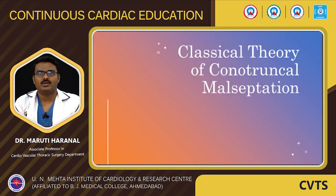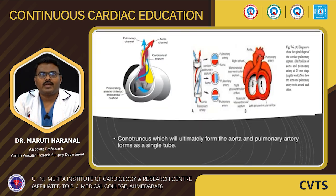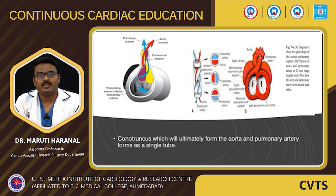In Lev's conotruncal malseptation theory, the conotruncus is a single tube which ultimately gives rise to the great vessels — the aorta and pulmonary artery. A process of spiral septation divides the conotruncus into two great arteries which wrap around each other. If the septum does not spiral in the usual fashion at all, the great arteries will be parallel to each other and there will be transposition of great arteries. If the spiraling process is only slightly abnormal, there will be the dextroposed position of the aorta and Tetralogy will result. DORV results when the spiraling anomaly is greater than in Tetralogy of Fallot but lesser than in Transposition of Great Arteries.